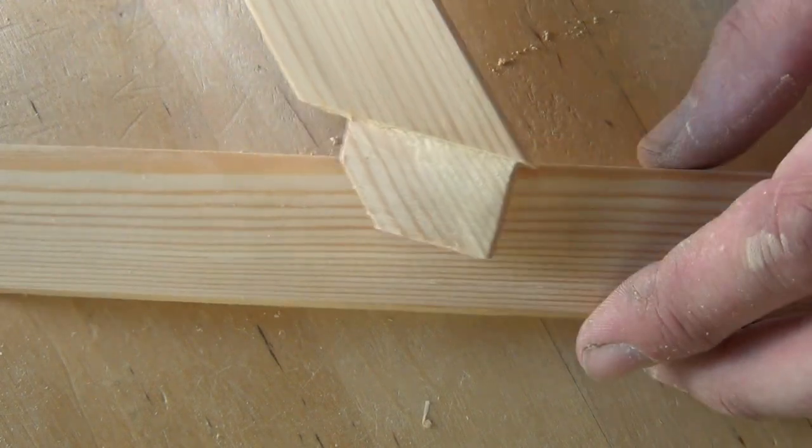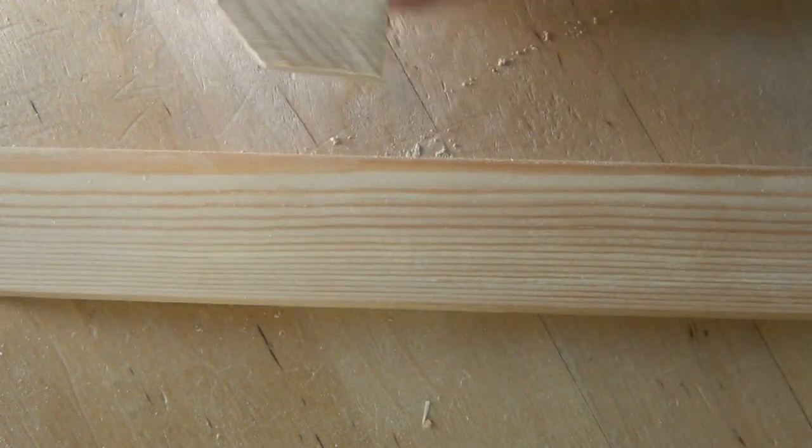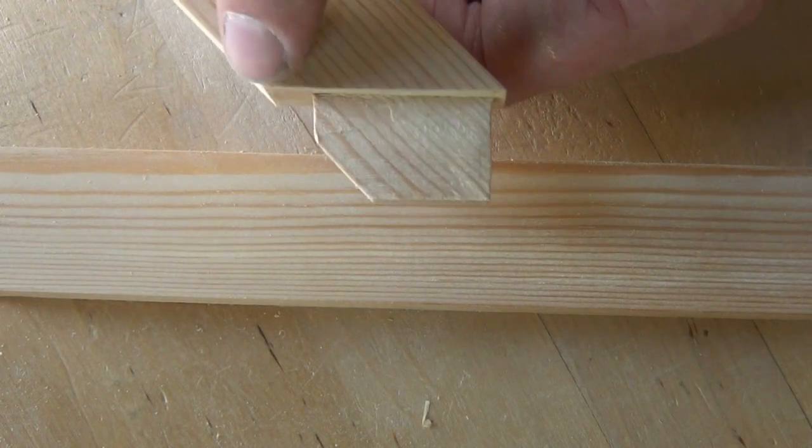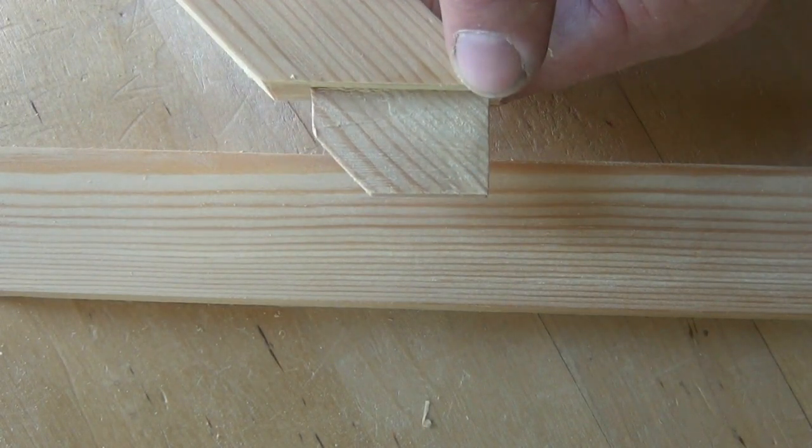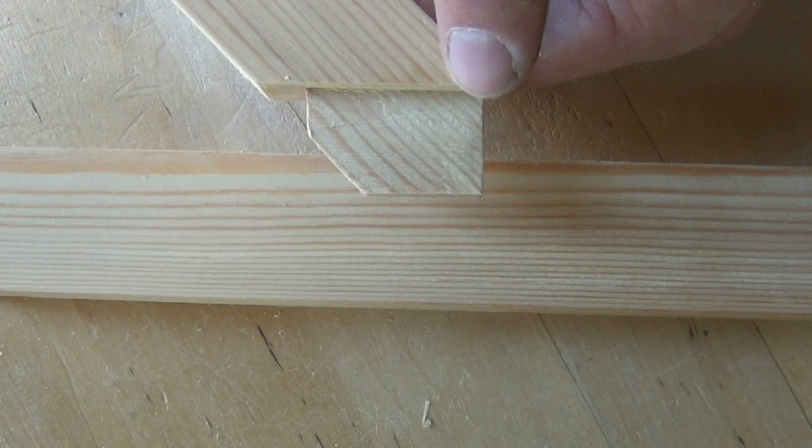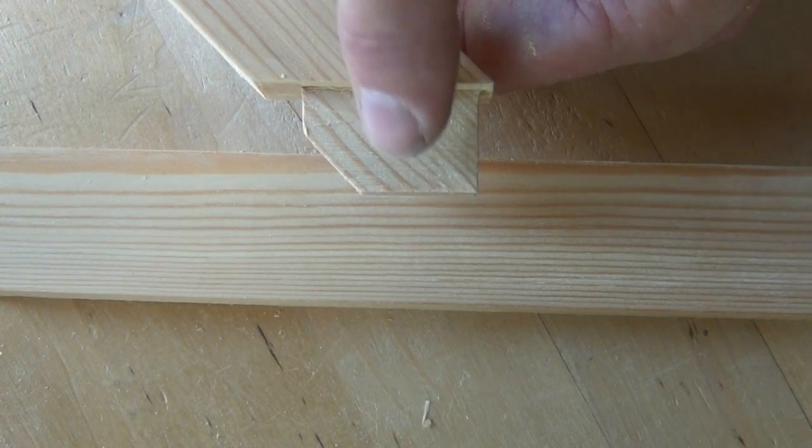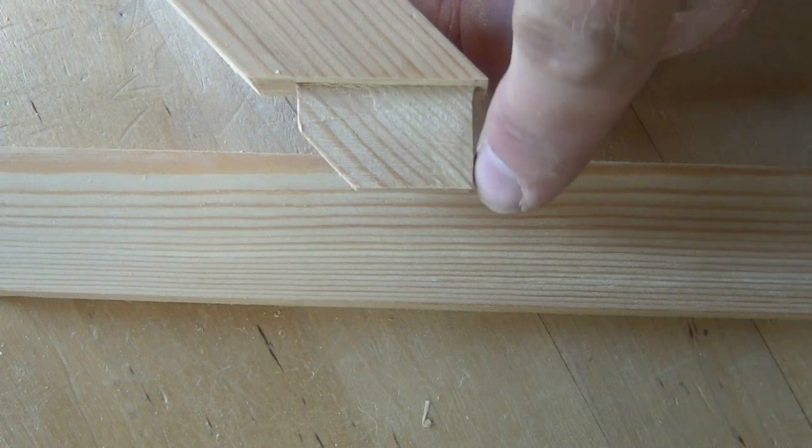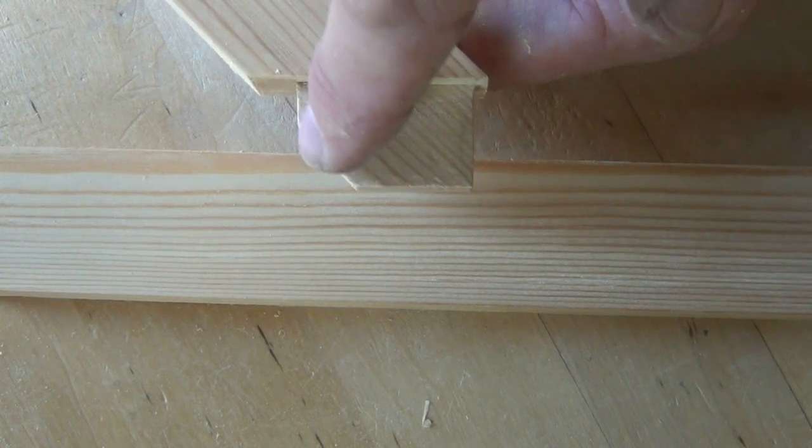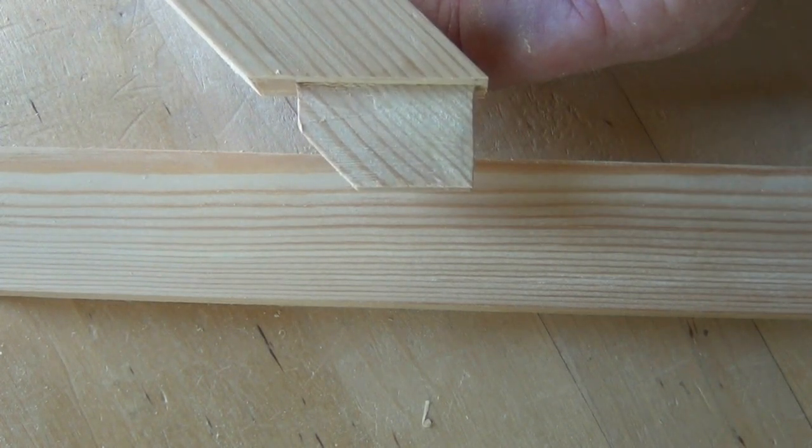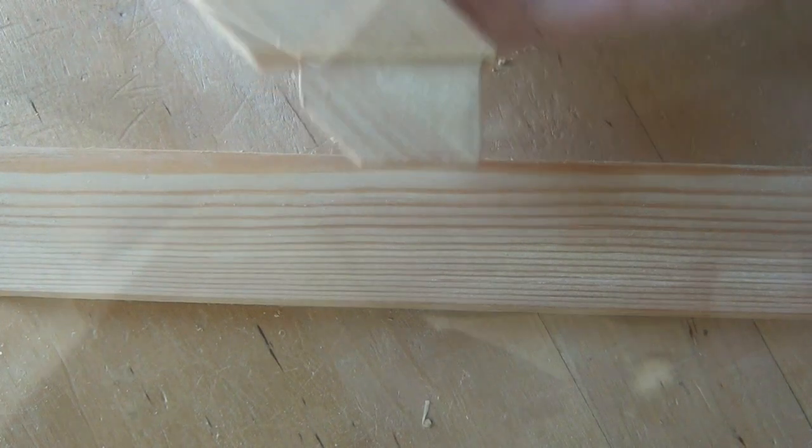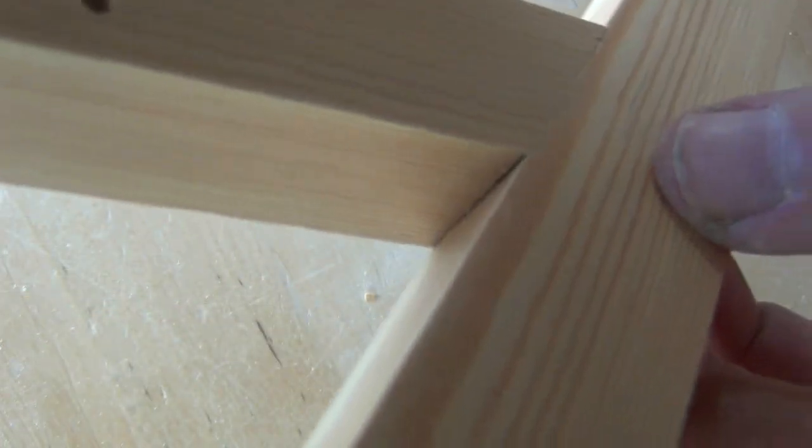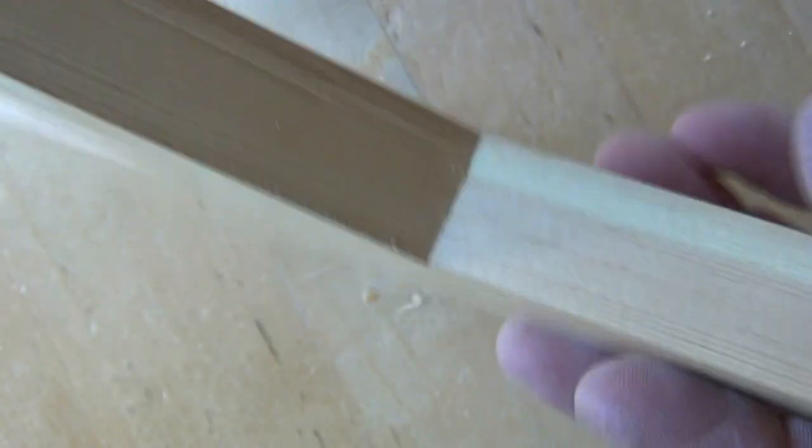The mating component we've cut at the angle we want to join the pieces together. Then we've cut on that a tenon the correct depth for the mortise and then we've squared the ends of the tenon off to fit against the squared ends of the mortise. And we have nice tight joint lines all the way round.